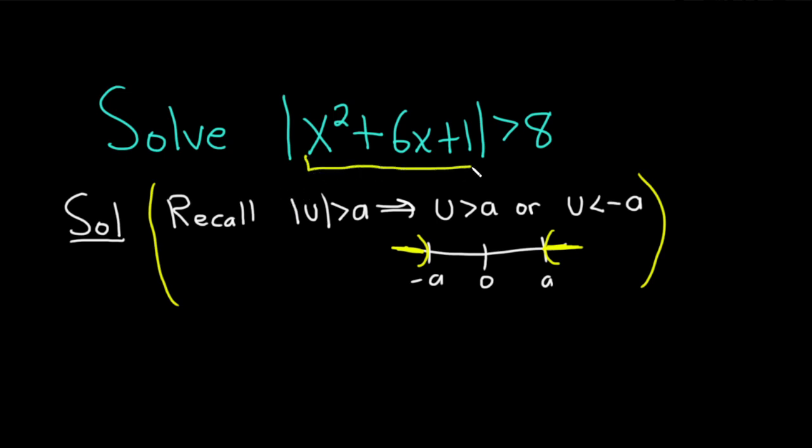So this takes the place of our u. So we have x squared plus 6x plus 1, and that's going to be bigger than 8. Or x squared plus 6x plus 1, that's going to be less than negative 8.